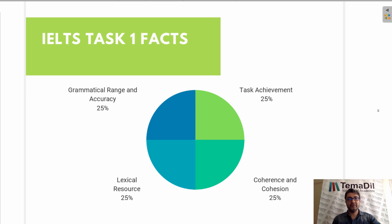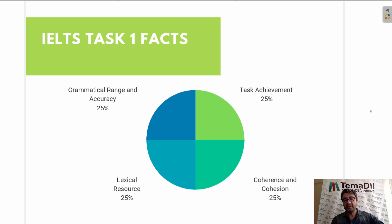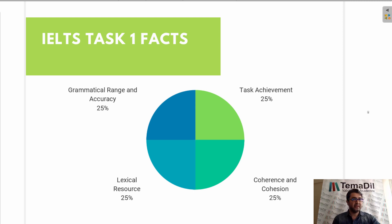Grammatical range and accuracy refers to the good use of grammar, so we shouldn't make grammatical mistakes. Task achievement means we shouldn't divert from the task — we shouldn't include our own opinions or other facts in our writing. Lexical resource refers to the good use of vocabulary. Coherence and cohesion refers to the organization of our writing, including the effective use of sentence connectors and how we organize our ideas.